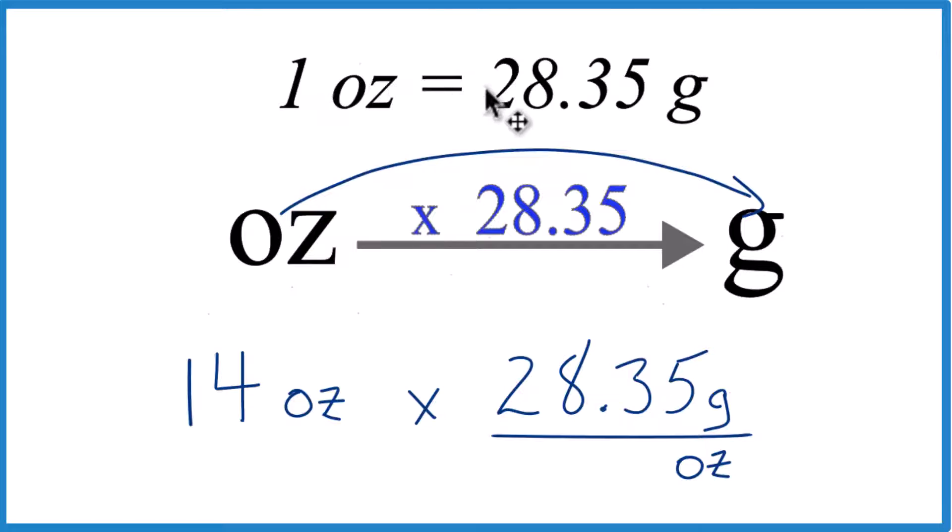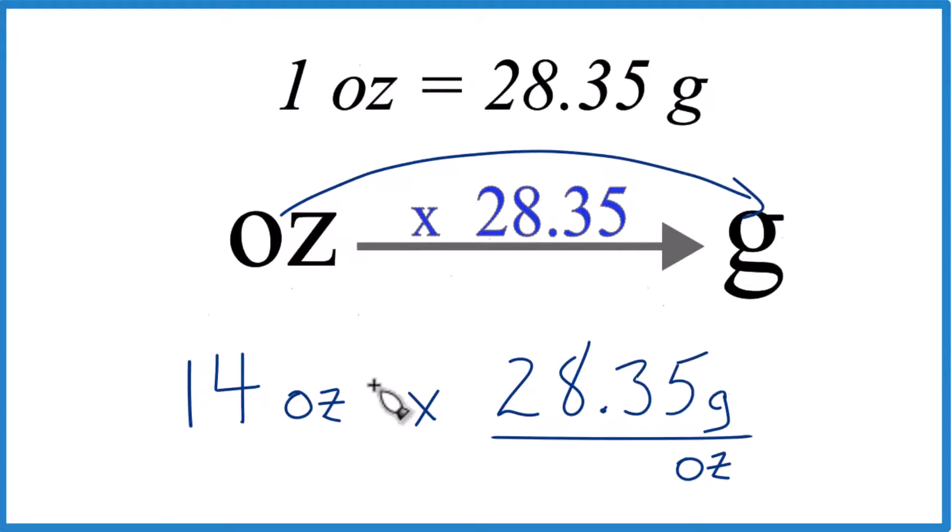Up here, just like this, we have one ounce is 28.35 grams. That's grams per ounce. But what's nice is the ounces, when we multiply, if on the top and the bottom they cancel out, we're left with grams.